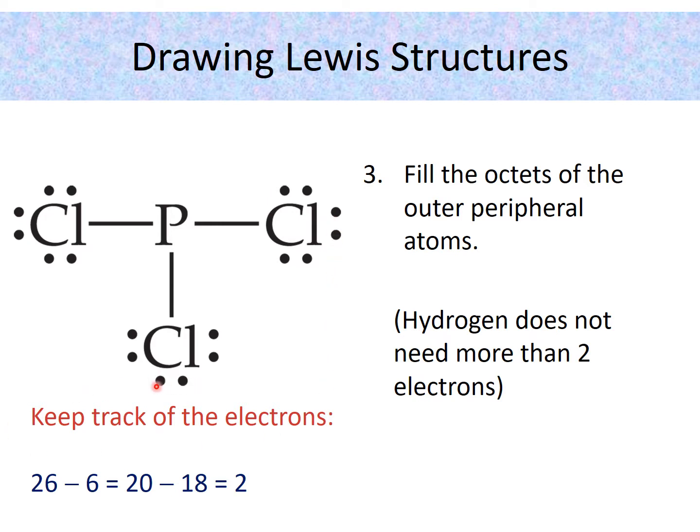So how many of these dots did we place in our structure? So if we count them all up, we would see that we placed 18 electrons. So we need to keep track of our electrons. So that's 20 minus 18 electrons that we used to complete the octet in the peripheral atoms. That leaves us with two remaining electrons.